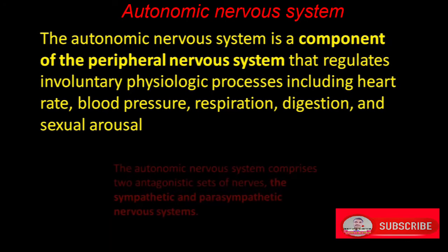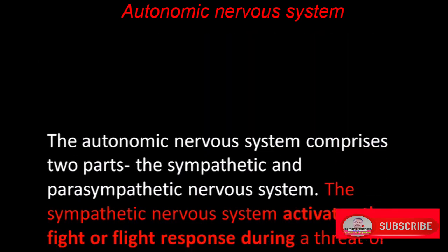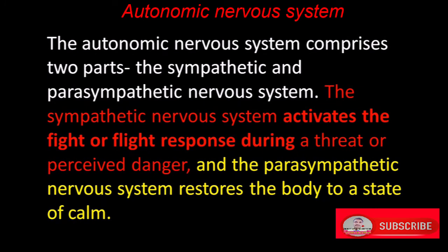The autonomic nervous system comprises two antagonistic sets of nerves: the sympathetic and parasympathetic nervous systems. The sympathetic nervous system activates the fight-or-flight response during threat or perceived danger, and prepares body organs according to the situation. The parasympathetic nervous system restores the body to a state of calm, refreshing and normalizing it.